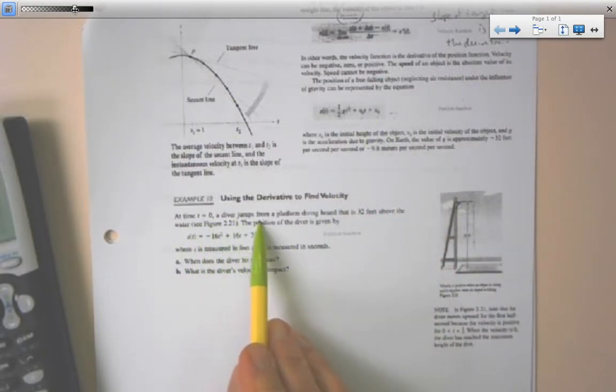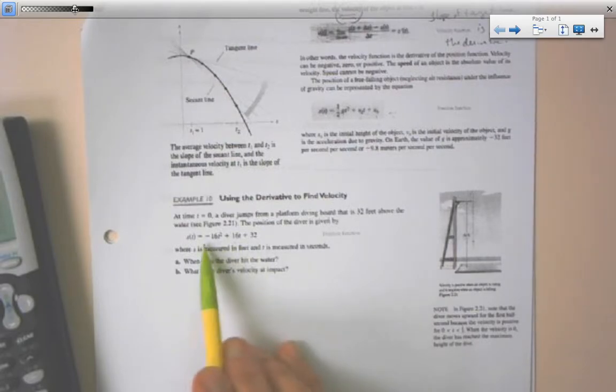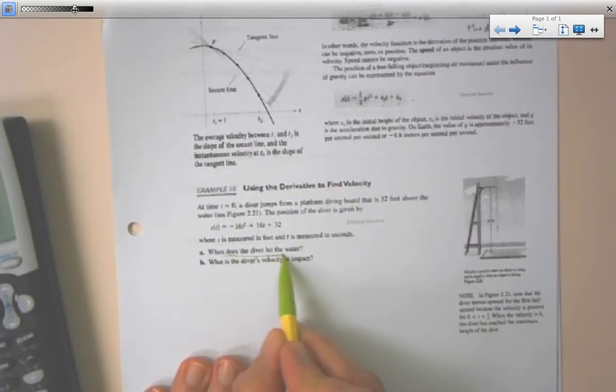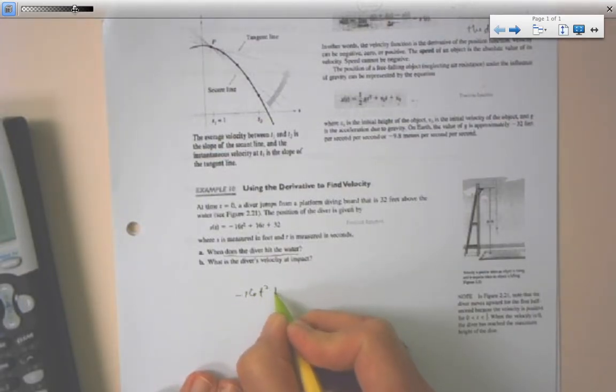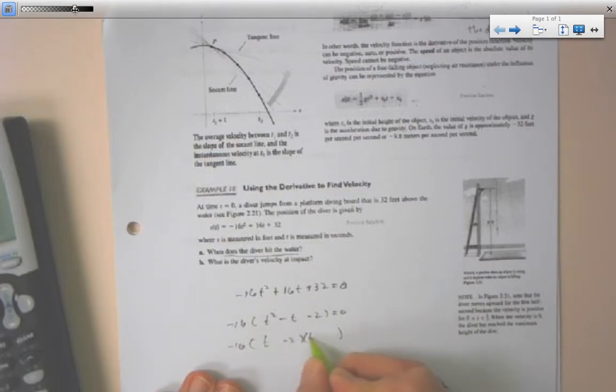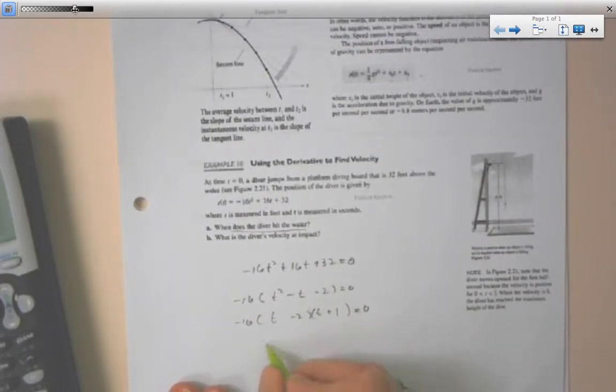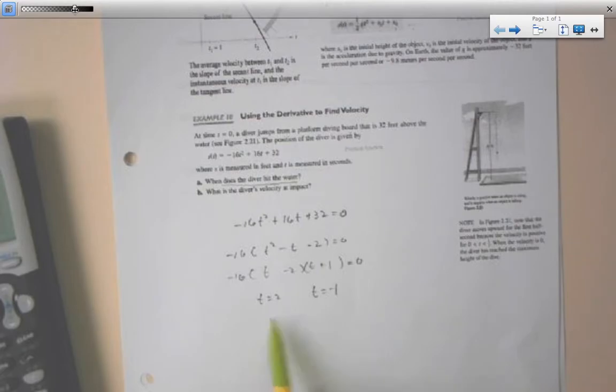At time t equals 0, a diver jumps from a platform diving board 32 feet above the ground. They nicely gave us the initial velocity and the position equation. When does the diver hit the water? The diver hits the water when its position is on the ground, so negative 16t squared plus 16t plus 32 equals 0. Let's factor out negative 16 and solve. We have either time 2 or time negative 1. We know we're not using negative time, so it takes 2 seconds to hit the water.